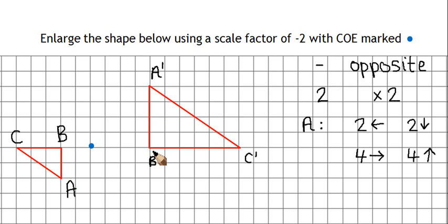This length was 3, so this new length is 6. So we've got a flip, and we've also got an enlargement of 2. So when you're looking at negative scale factors, the negative bit means you end up doing the opposite. The number tells you about the size of the new shape.